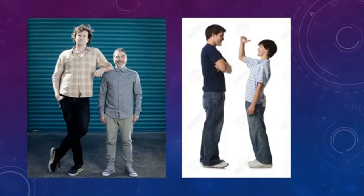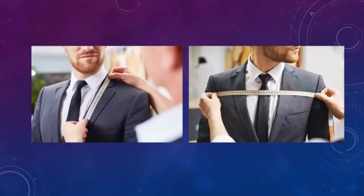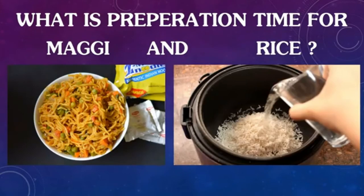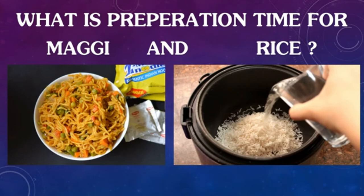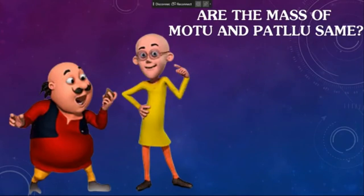In this figure we can see two persons comparing their height, and a tailor measuring the height of a person using a measuring tape. Have you ever prepared Maggie at home? It takes a maximum of five minutes. But when your mother prepares rice, it takes 20 to 30 minutes. So we require less time for preparing Maggie and more time for preparing rice.